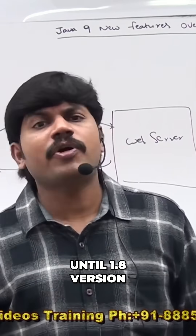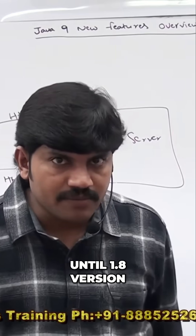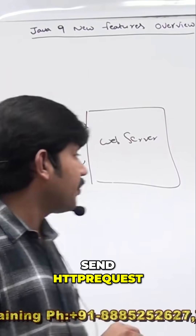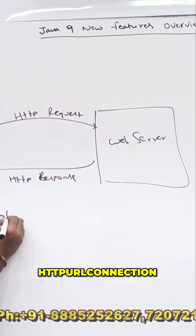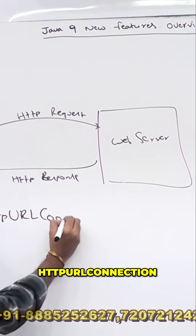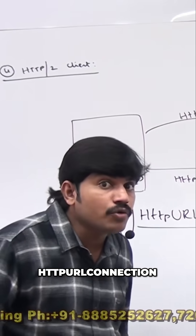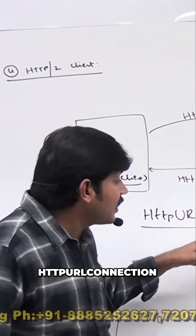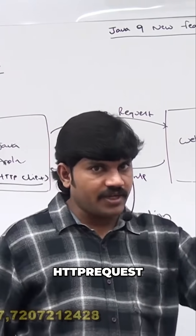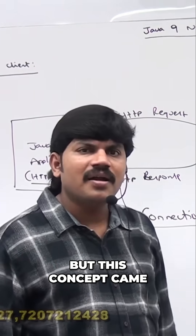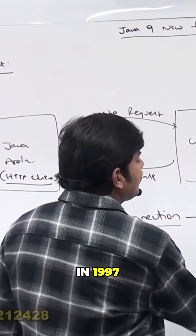Until Java 1.8, if you want to send an HTTP request, the concept we used was HttpURLConnection. By using that we can send a request to a web server — an HTTP request. But this concept came in 1997.